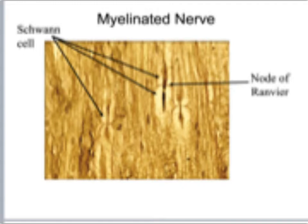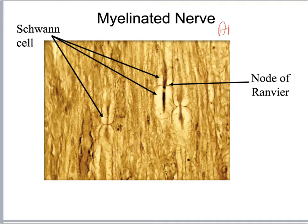Here's another photomicrograph from your APR, and what you can see is an individual Schwann cell and another individual Schwann cell, and then you've got this nice little gap right in here which is going to be your node of Ranvier — you can see they're just kind of stacked up on each other.